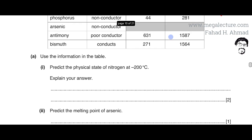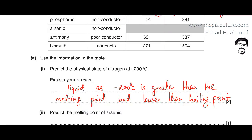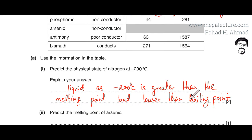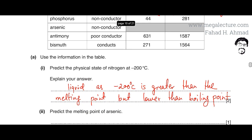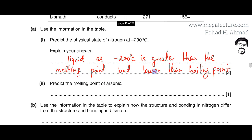The answer is that nitrogen is liquid. The explanation: minus 200°C is greater than the melting point but lower than the boiling point, so it's between the two values. Any temperature between the melting and boiling point means the substance is a liquid.